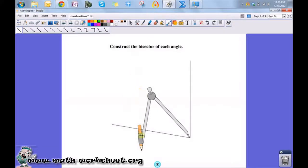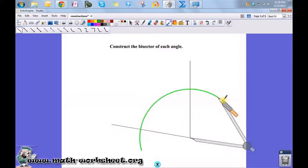To construct an angle bisector, you first want to construct an arc of arbitrary radius that intersects both of the rays of the angle.